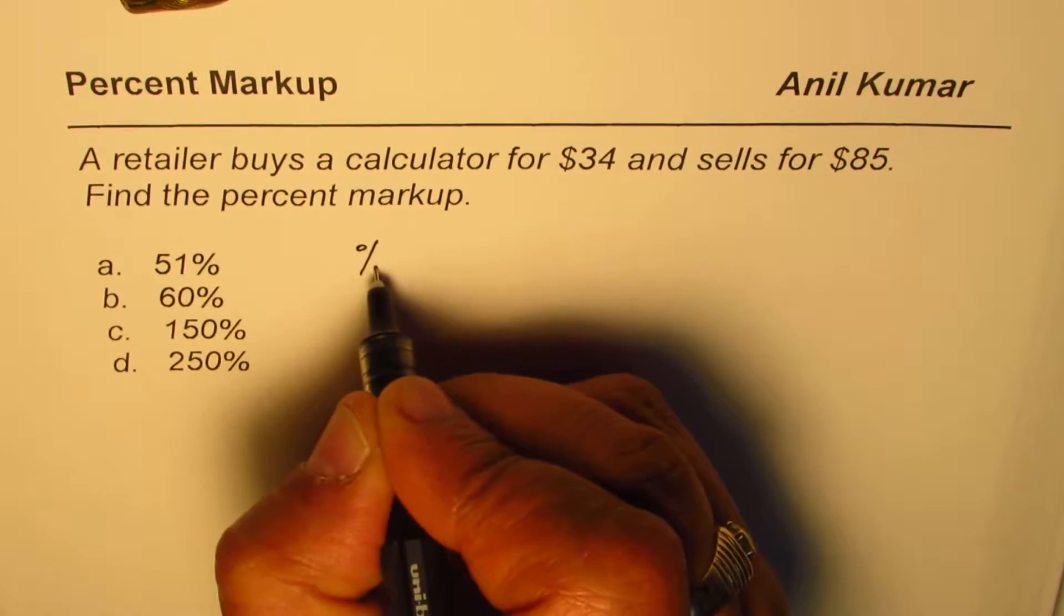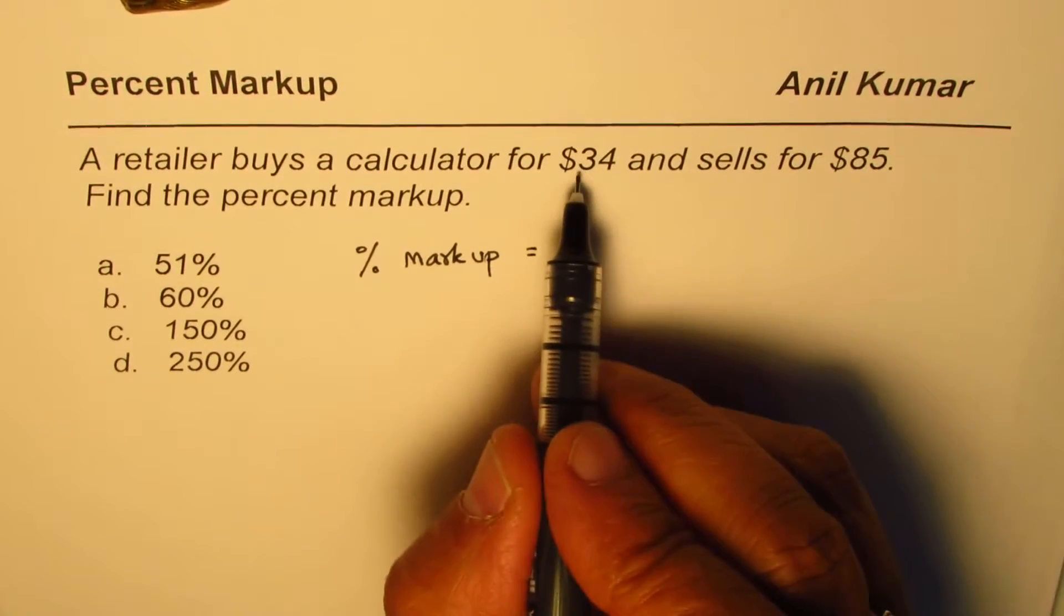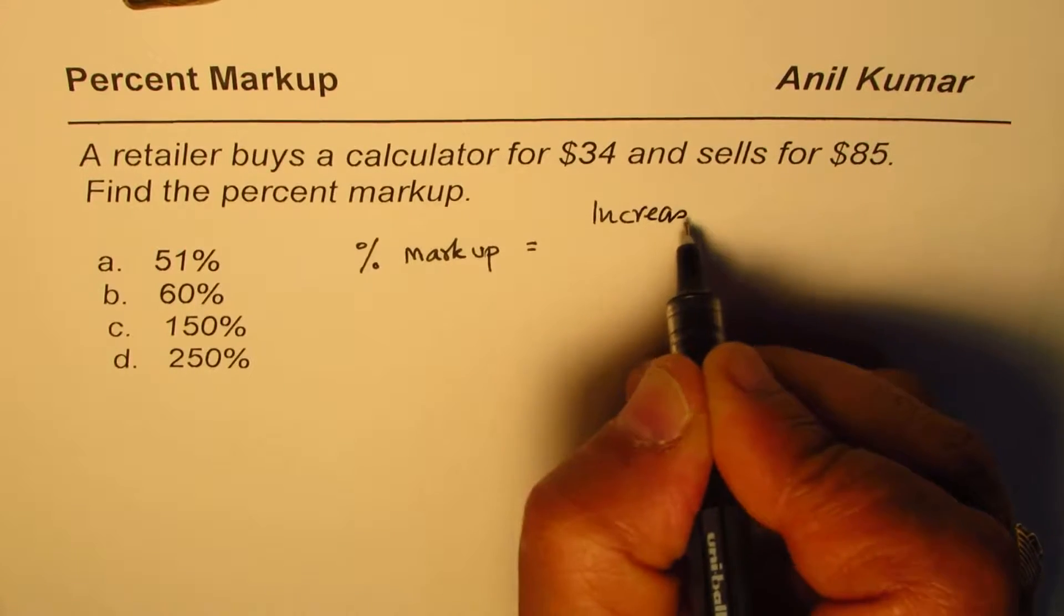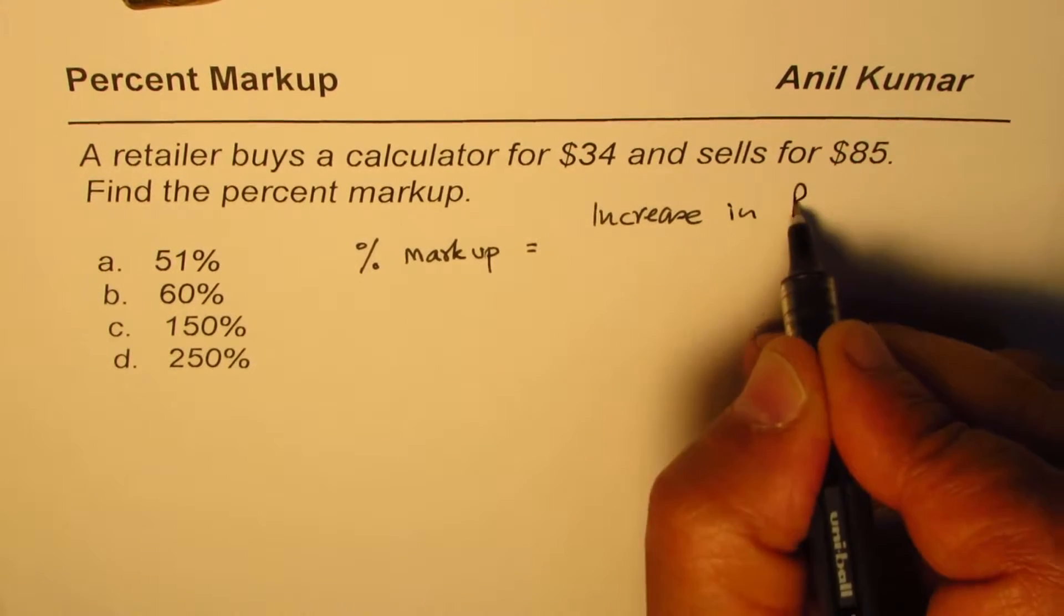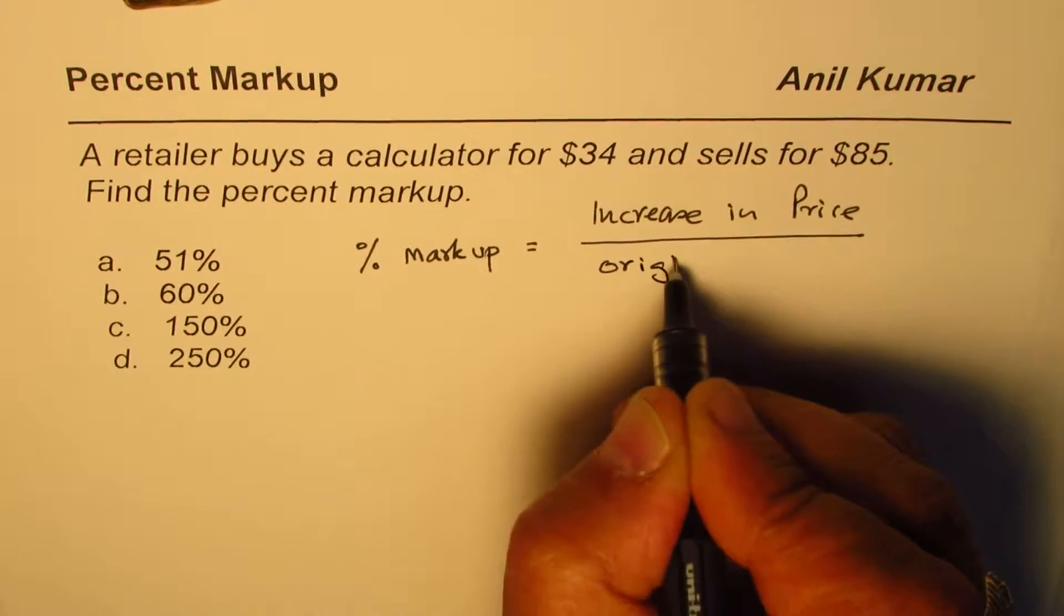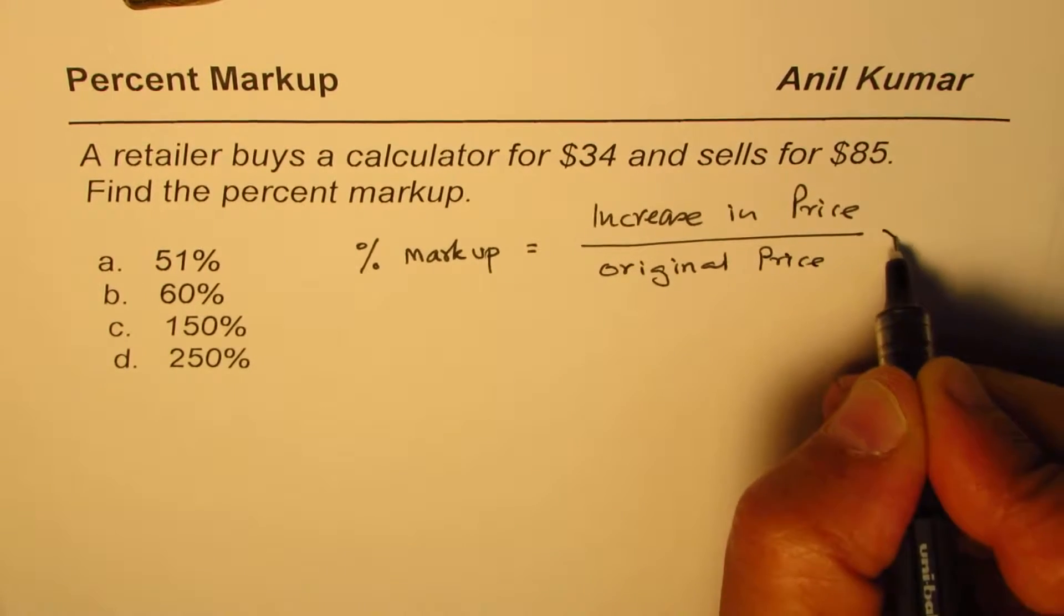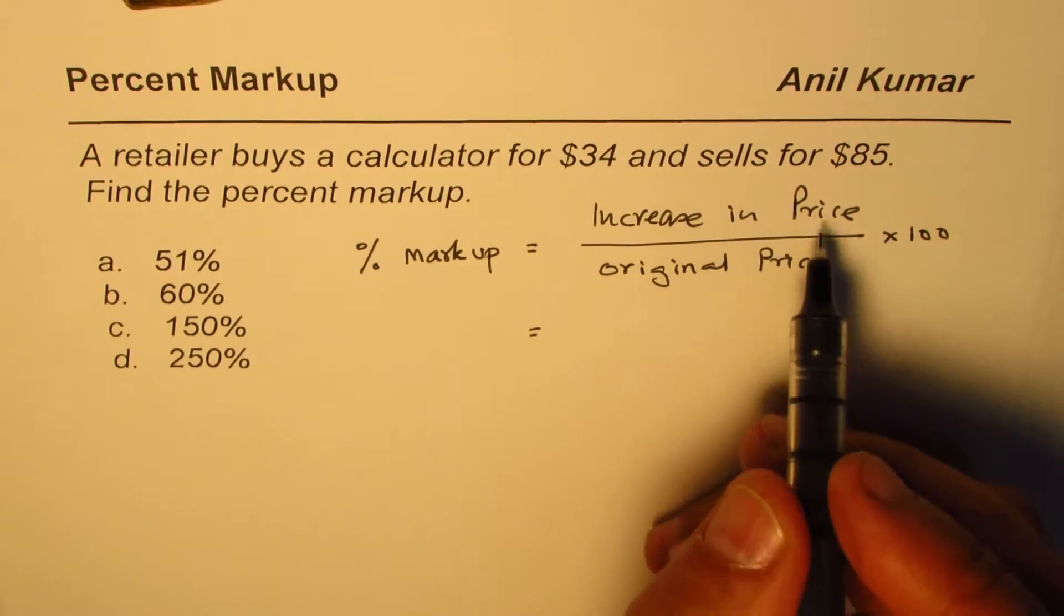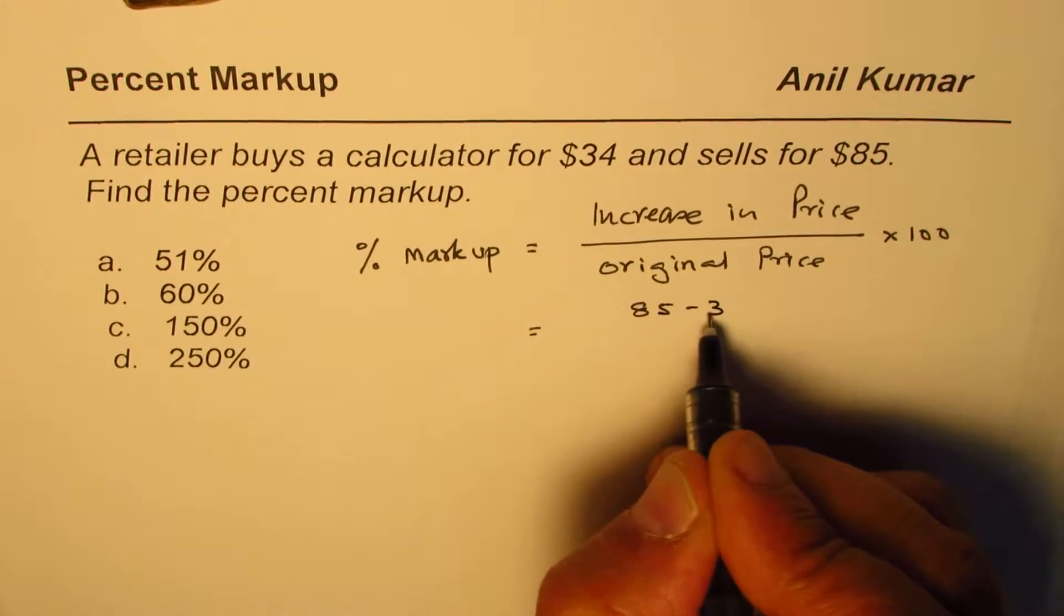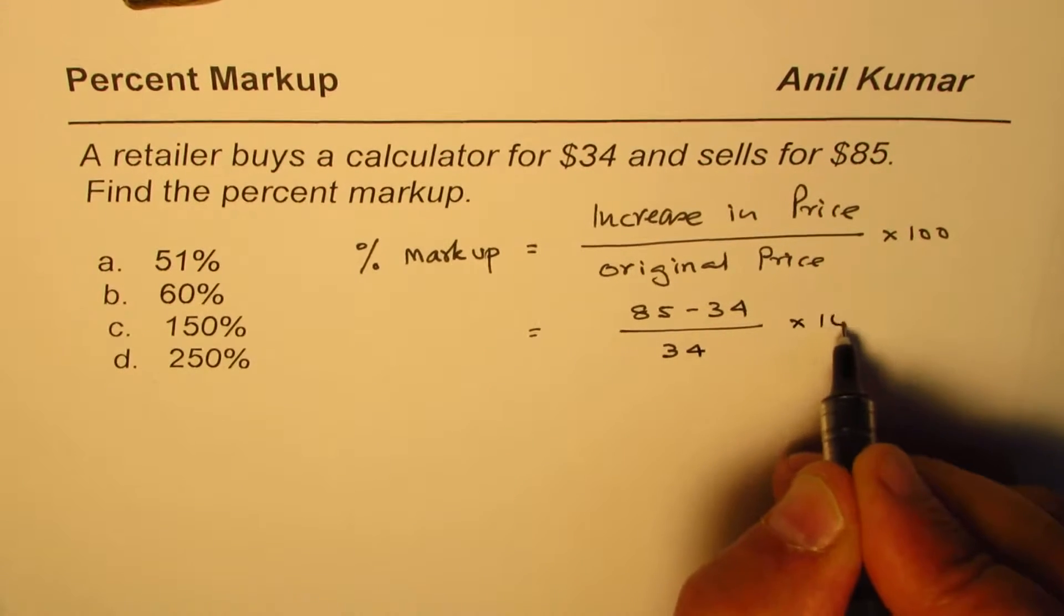Percent markup is increase in price over original price times 100. Here the increase in price is 85 minus 34. Original price is 34 times 100.